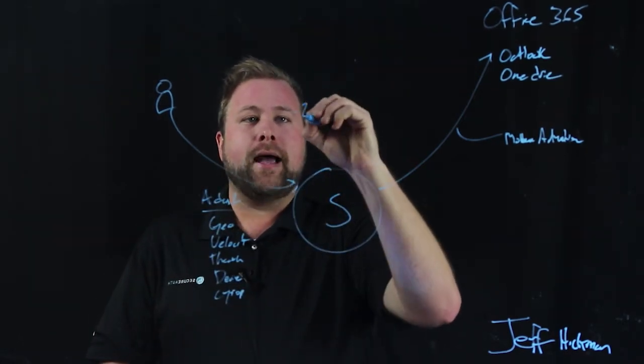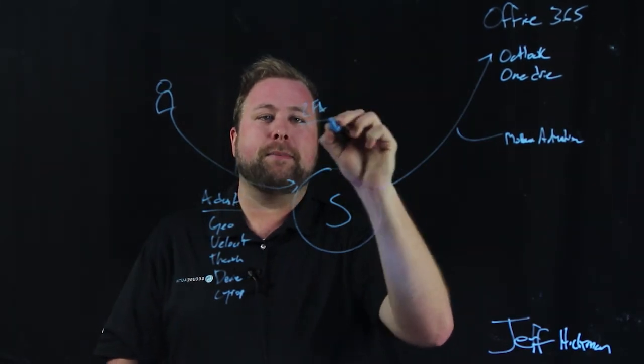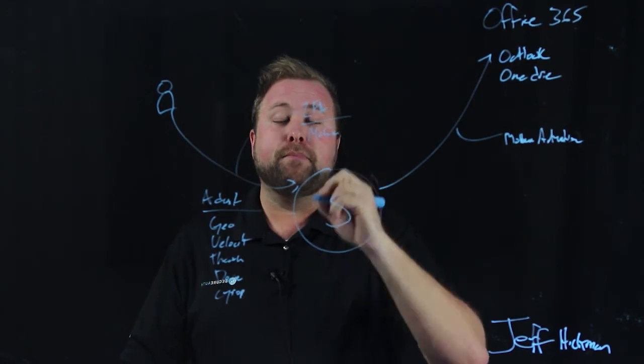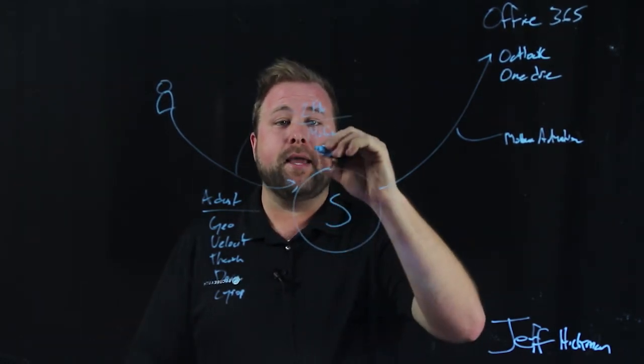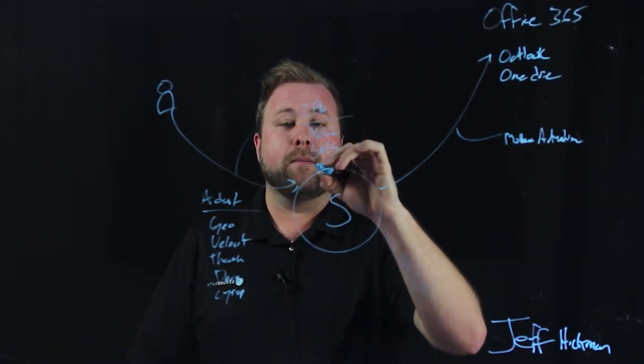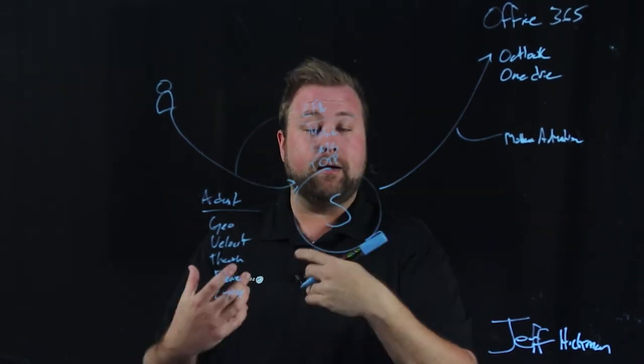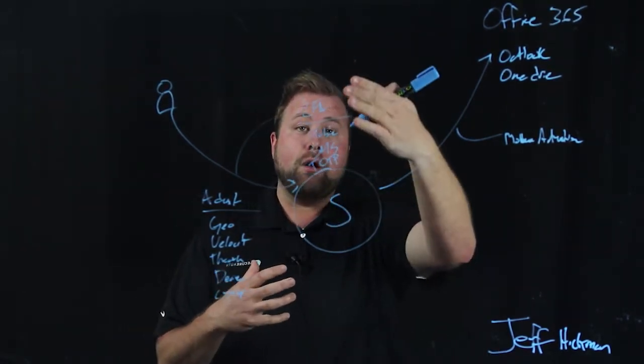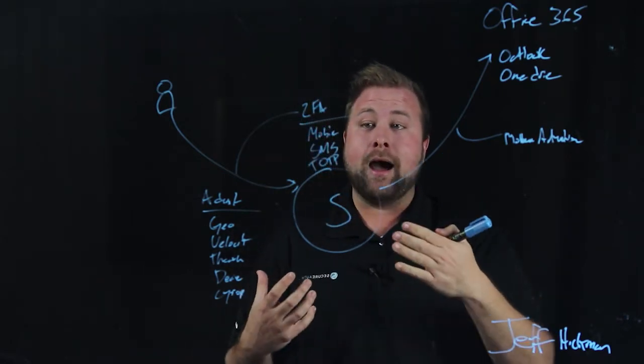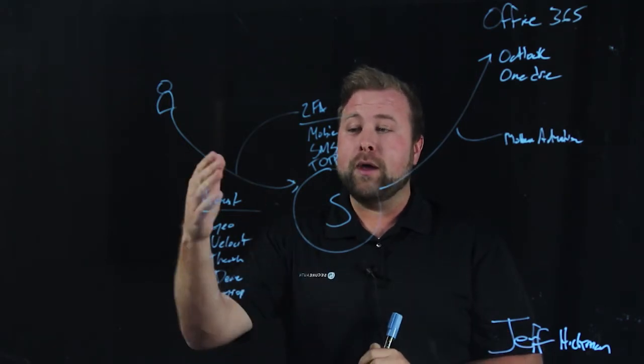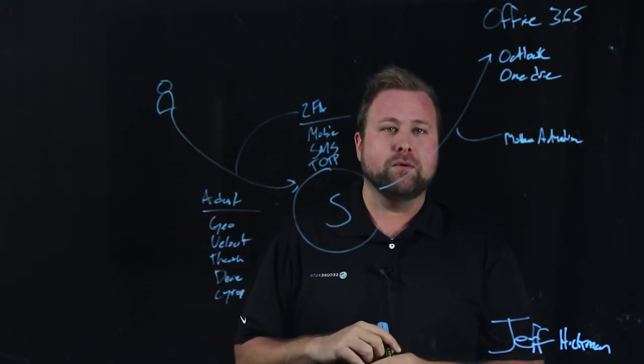So adaptive allows us to really focus on the context and when the user is going to authenticate to change that. If they do violate a rule, then that's the point in time where we could ask them for a step up authentication with two factor, whether that's a mobile push notification to their device, maybe it's a SMS, or maybe even it's a time-based OTP that we send that we ask the user to put in. All those allow the user to have an easy method of two-factor authentication, but only when it's necessary, only when they violated some sort of adaptive rule.